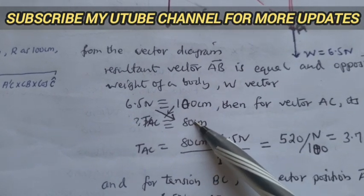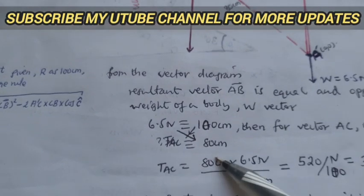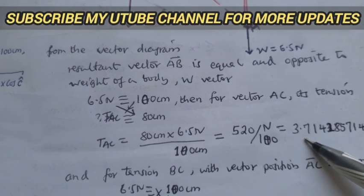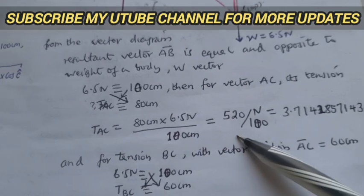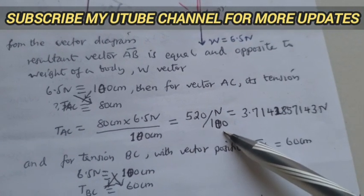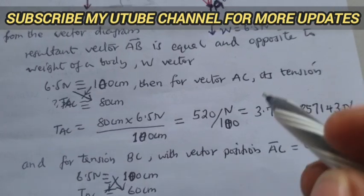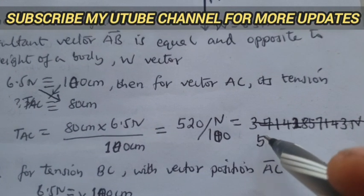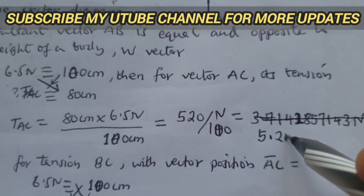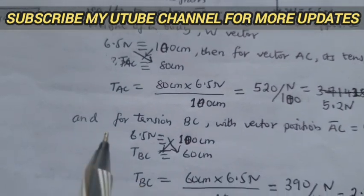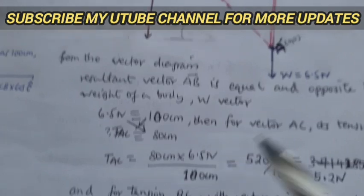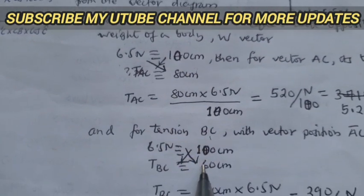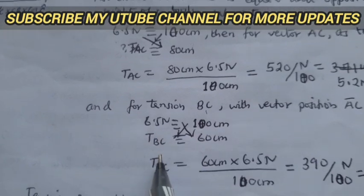For 80 centimeter, for this length, our tensions will be a tension AC, and it will be 3 is equal to, this is 100, this is equal to 5.2 newtons, not this one. This is, by mistake, this is equal to 5.2 newtons. And our tensions BC, our tension BC is 60 centimeters, then from here 60 centimeters, when we put 60 centimeters, then our tension BC.